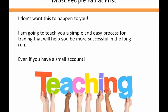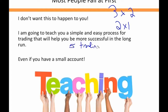Most people fail at first — I don't want this to happen to you. I'm going to teach you a simple and easy process for trading that will help you become more successful in the long run, even if you have a small account. This is the three-by-two, two-by-one rule. There are generally five trading days in a week — I try to make money three of the days and lose money two days.